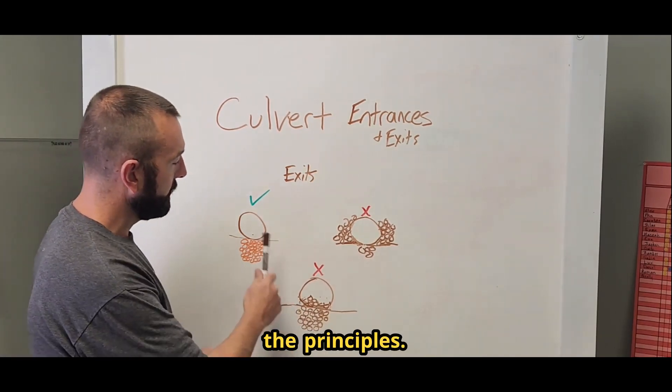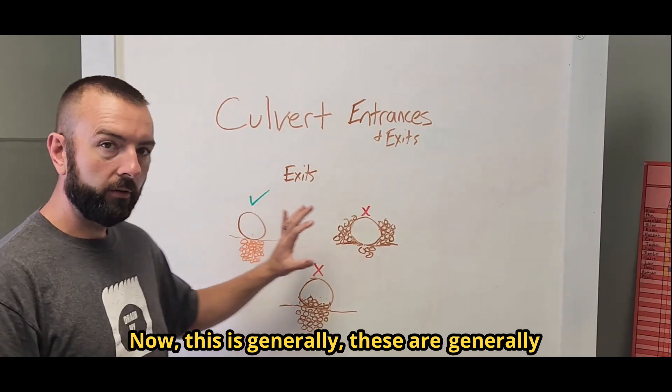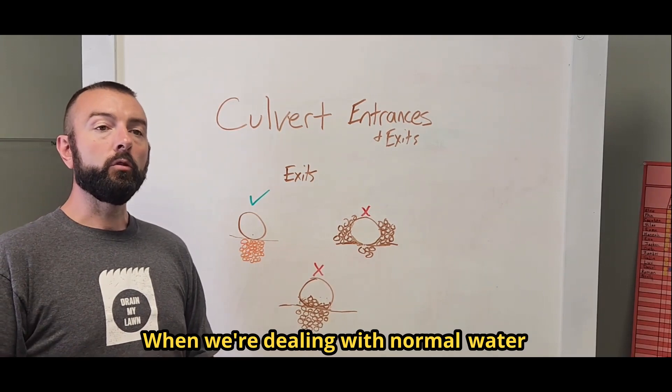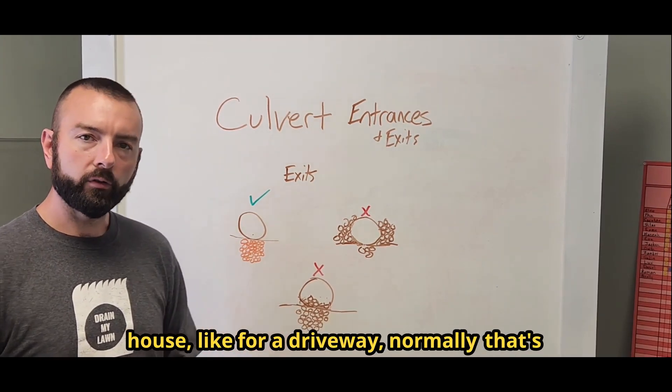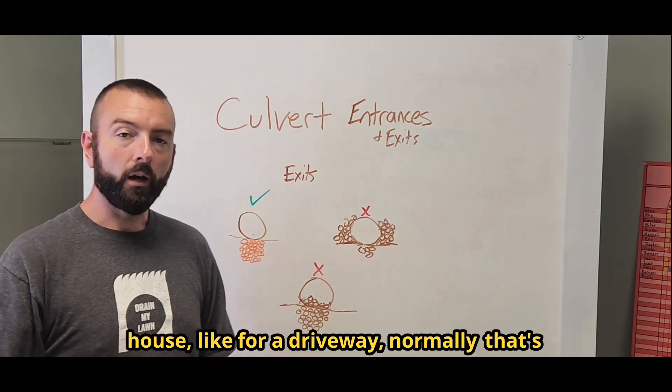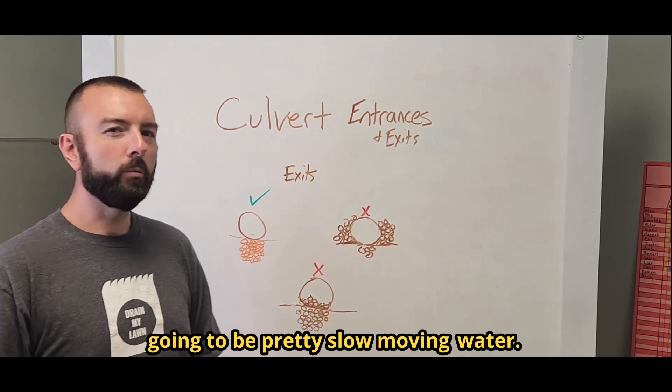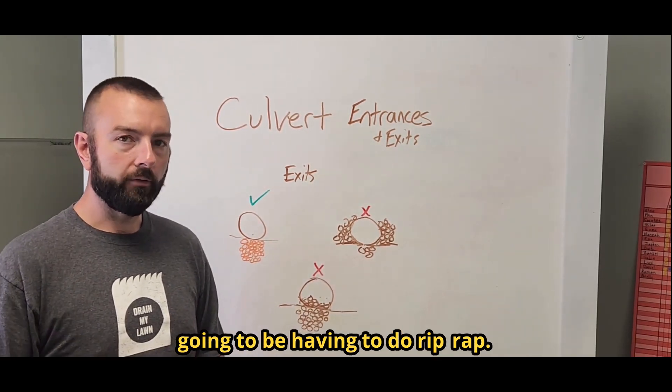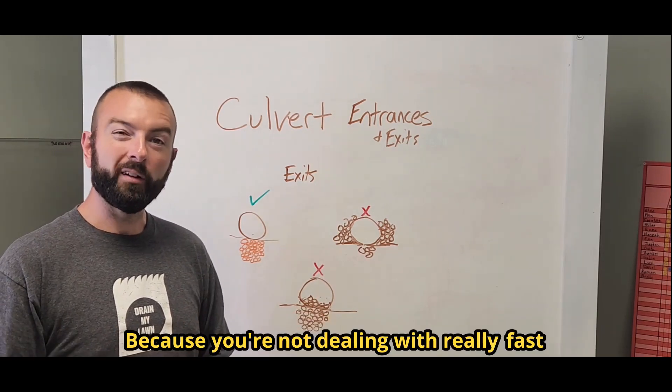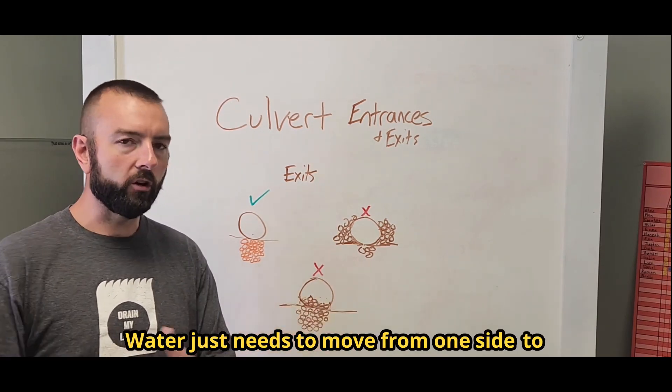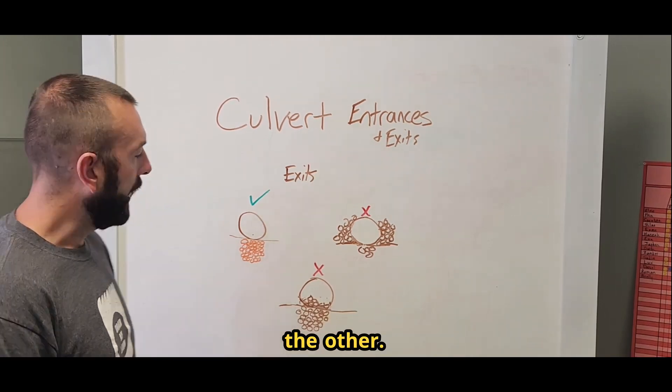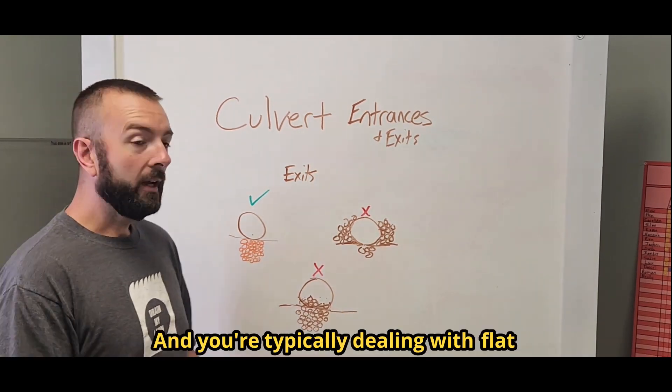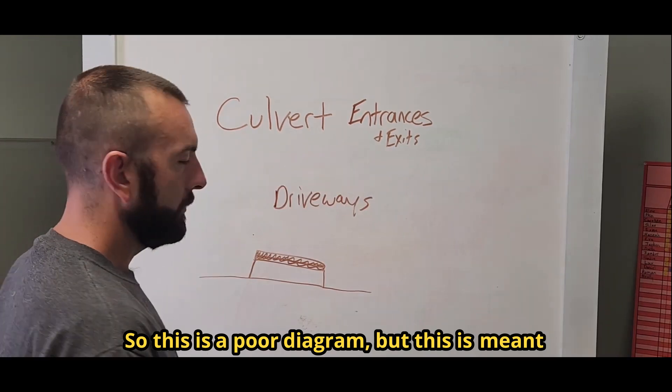So those are some of the principles. Now these are generally principles with culverts with fast moving water. When we're dealing with normal water flow through a drainage ditch in front of a house, like for a driveway, normally that's going to be pretty slow moving water. It can move quickly and you're not always going to be having to do riprap because you're not dealing with really fast moving water. Water just needs to move from one side to the other. The erosion is not going to be quite the same and you're typically dealing with flat surfaces at that point.